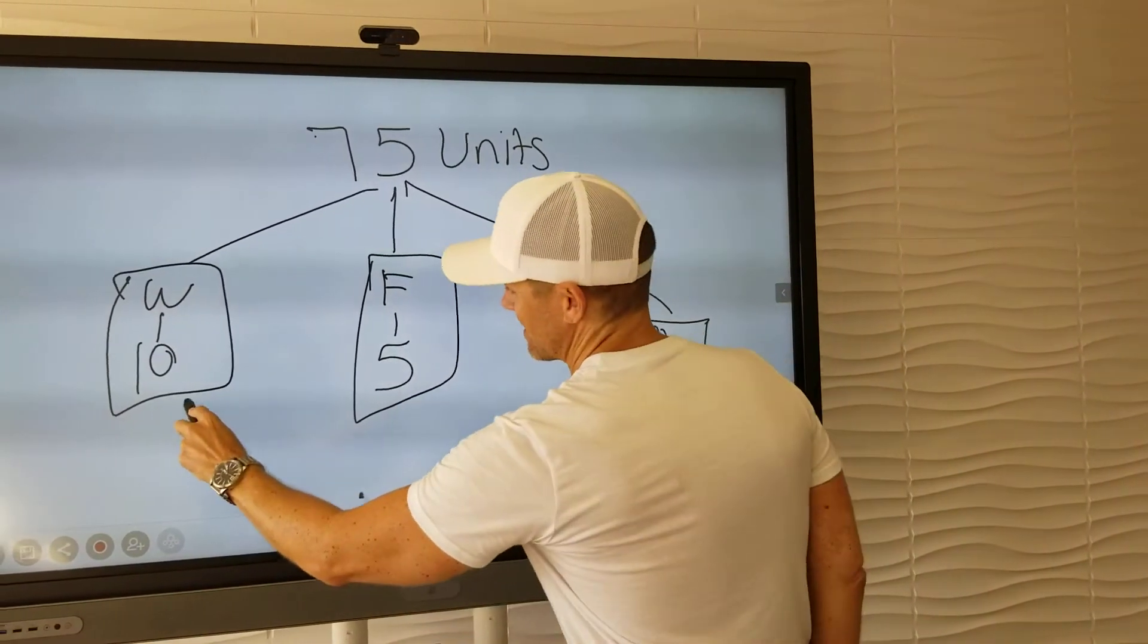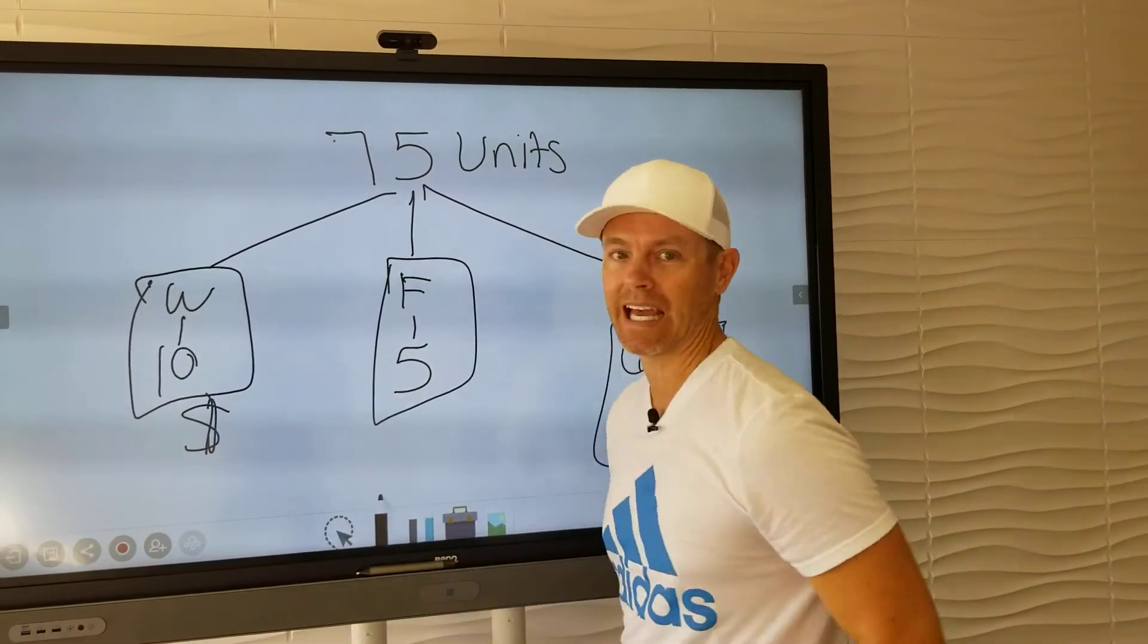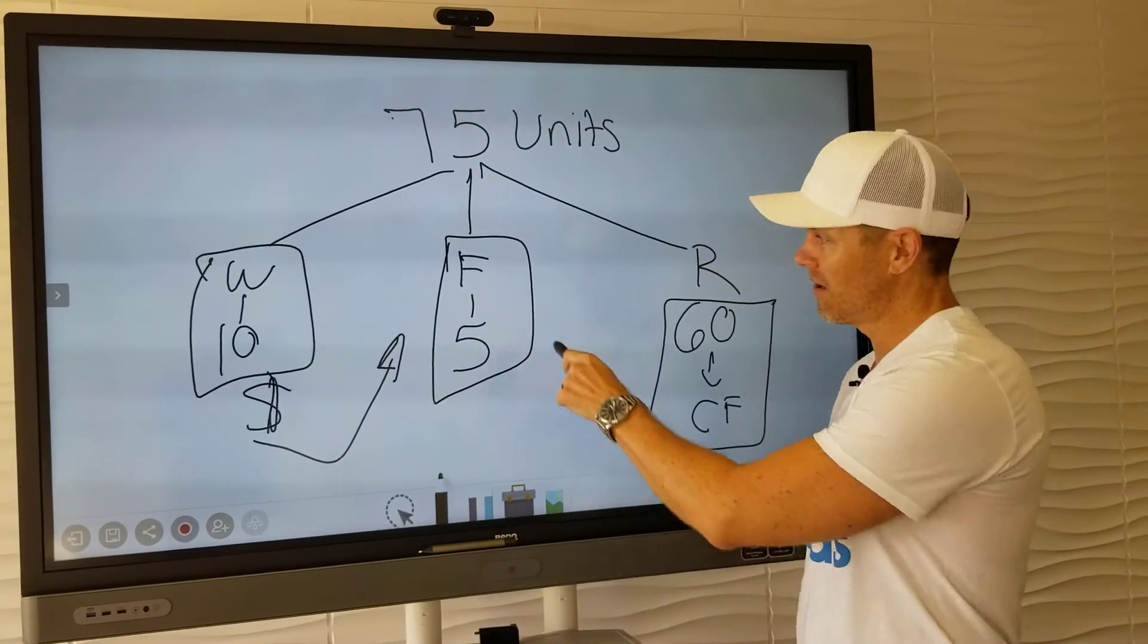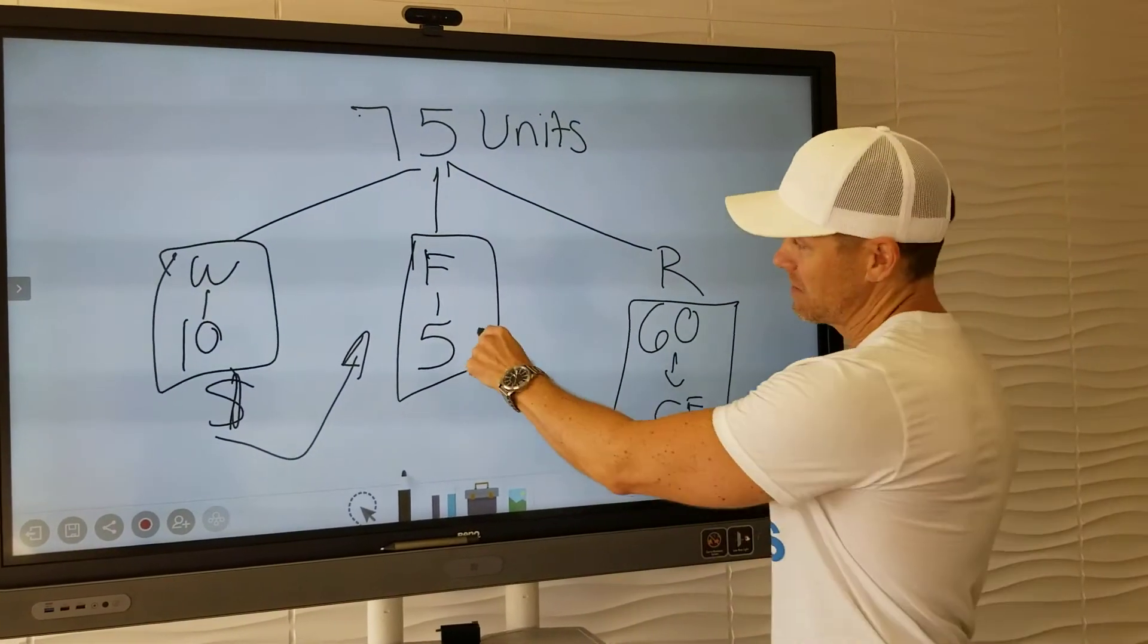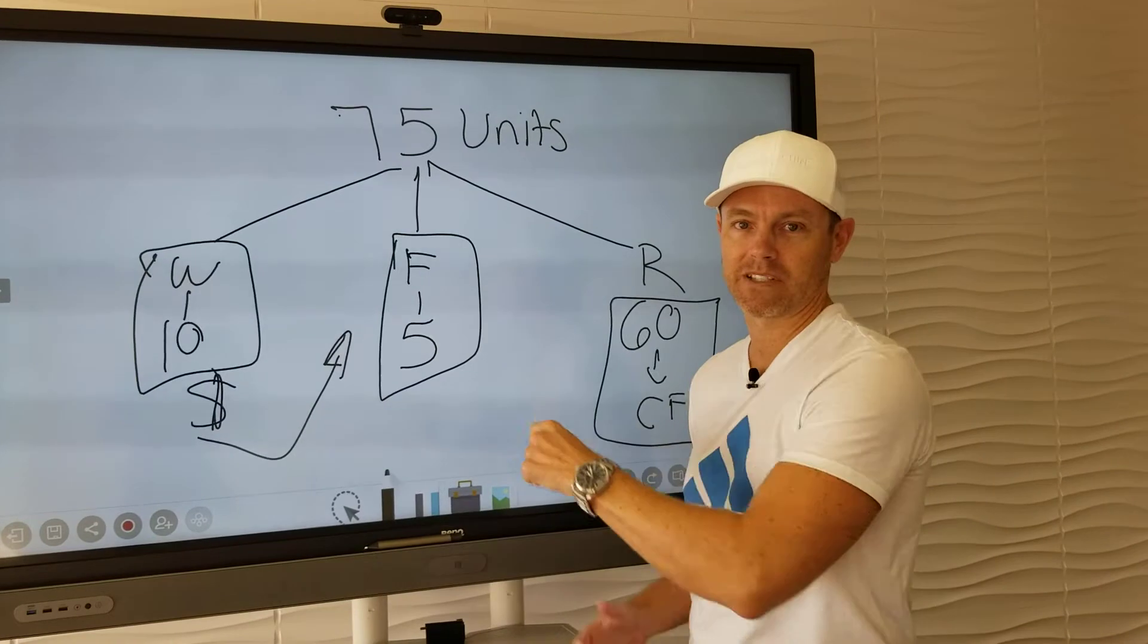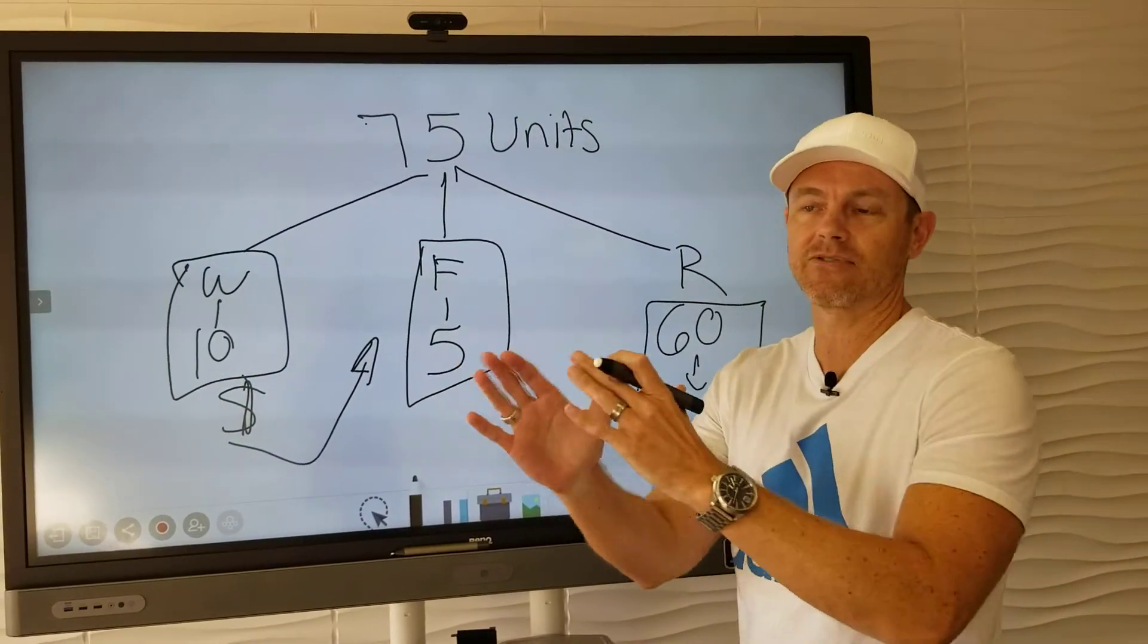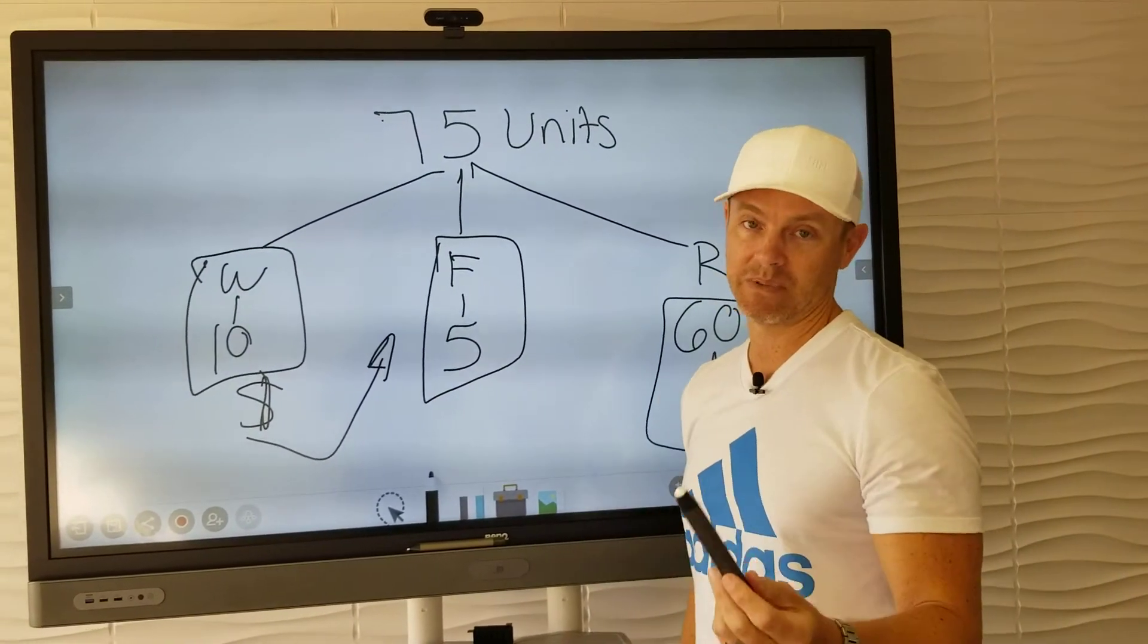So the cool part about this is when he wholesales and generates immediate cash, what he can do with that cash is put it towards the rehab of the flips on those five properties. So it's one cohesive strategy that's actually feeding the different aspects and different buckets inside of his business.